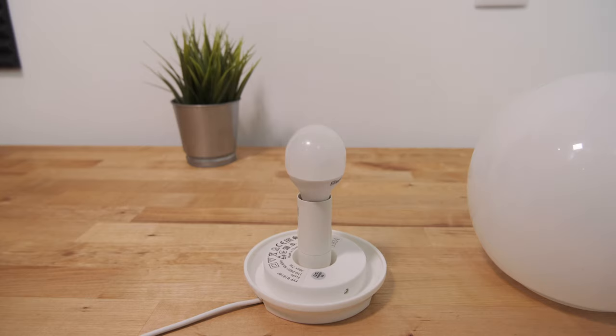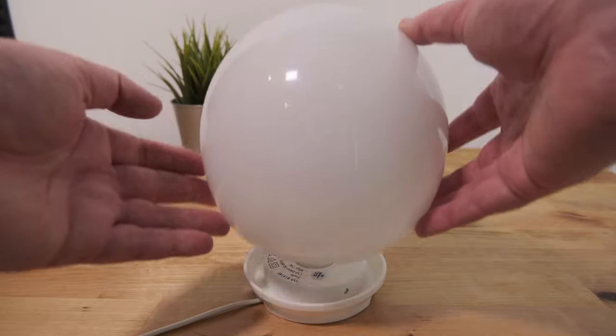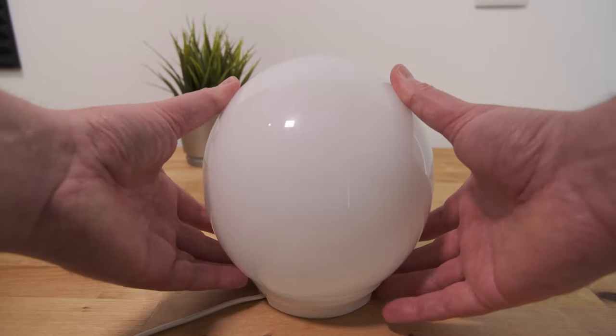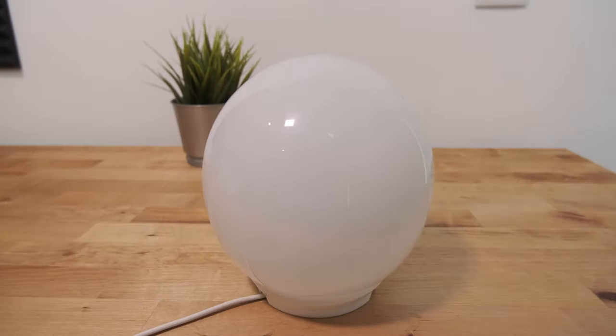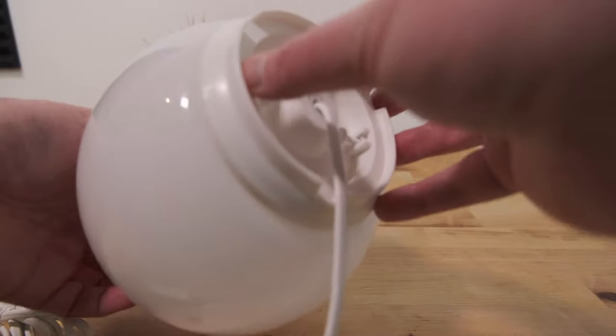After screwing in the bulb, the glass bulb fits over the top. And then you secure it in position by tightening a couple of plastic thumb screws under the base.